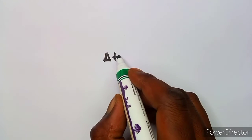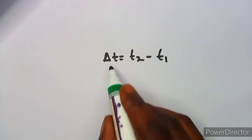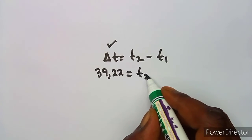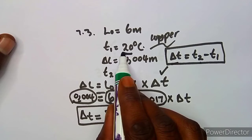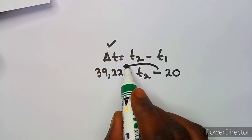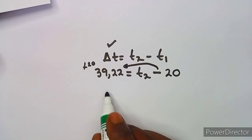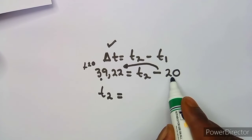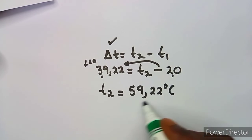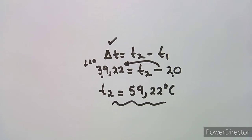Since the change in temperature equals T2 minus T1, we have 39.22 equals T2 minus T1. T1 is 20 degrees Celsius. Transposing, T2 equals 39.22 plus 20, which gives T2 equals 59.22 degrees Celsius. That's the temperature of the warm water.